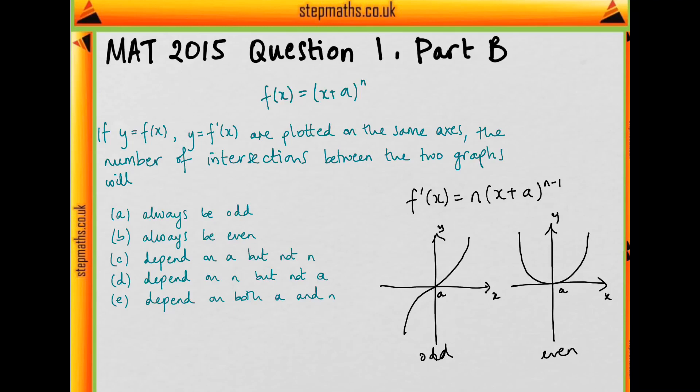So our functions will look something like this. One will look like this and the other one will look like this. And they will both cross the x-axis at x is equal to... oh sorry, that should be minus a.